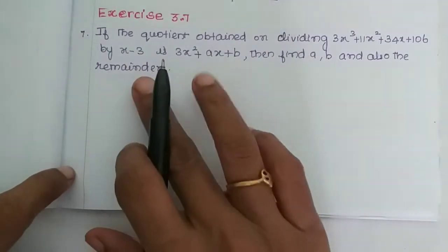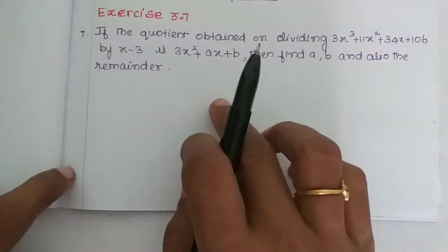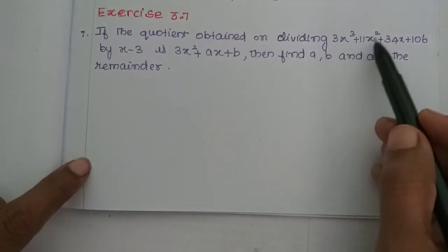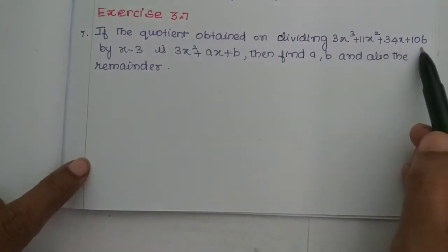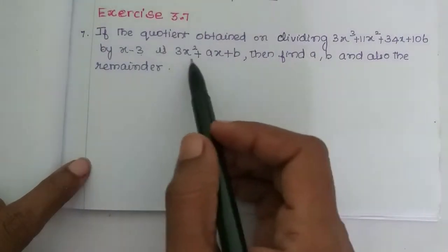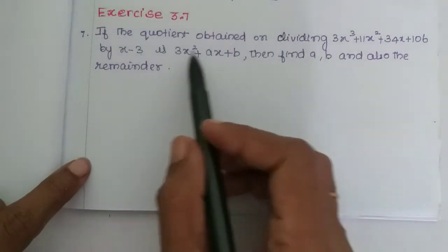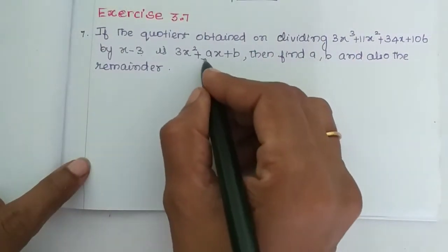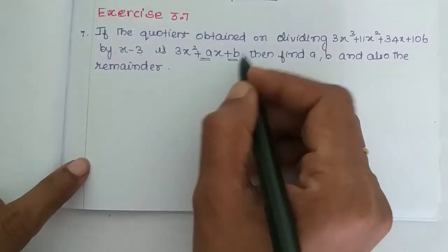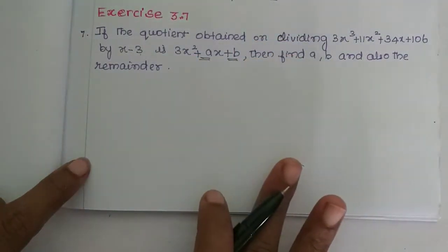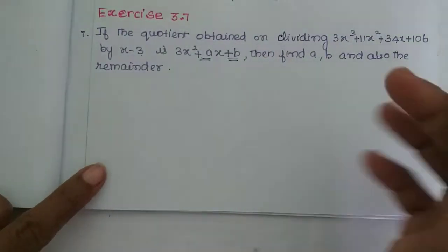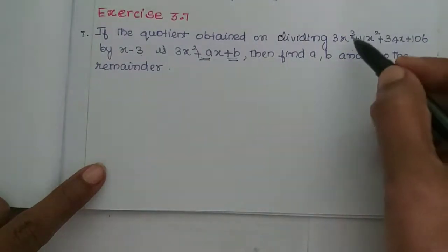We need to find the values of a and b, and the remainder. The quotient is obtained on dividing 3x³ + 11x² + 34x + 106 by the polynomial x minus 3. In the quotient, the x-order coefficient is a and the constant is b. We will divide the polynomial using the standard formula.